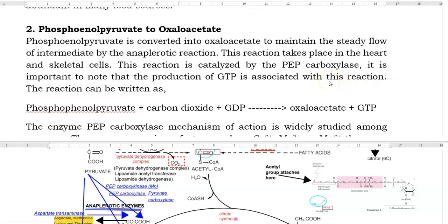Phosphoenol pyruvate to oxaloacetate. This is the second anaplerotic reaction. Phosphoenol pyruvate is converted into oxaloacetate in order to maintain the steady flow of intermediates by the anaplerotic reaction. This reaction takes place in the heart as well as in the skeletal cells. This reaction is catalyzed by PEP carboxylase enzyme. It is important to note that the production of GTP is associated with this reaction. The reaction is shown below.